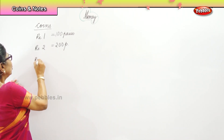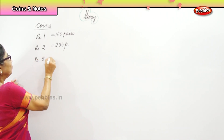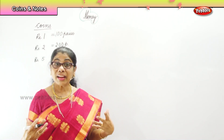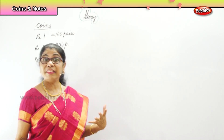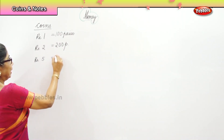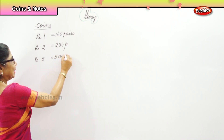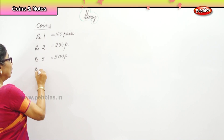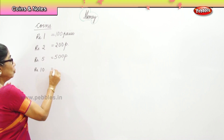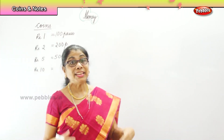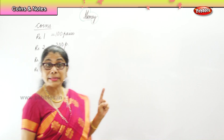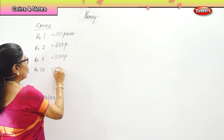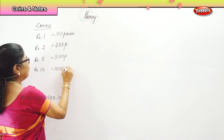Now we have rupees five. A five rupee coin has five hundred paisa — hundred into five is five hundred paisa. In a ten rupee coin we have one thousand paisa.